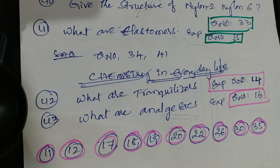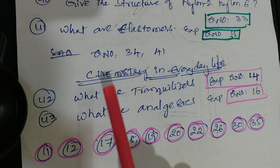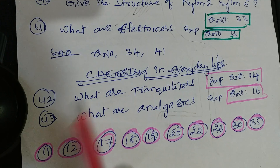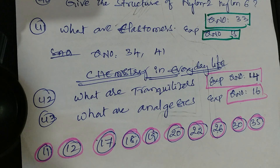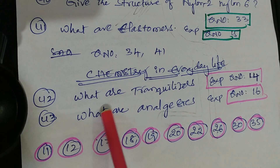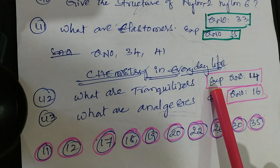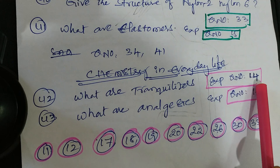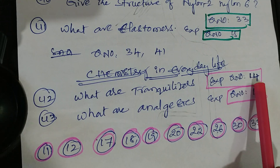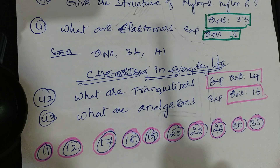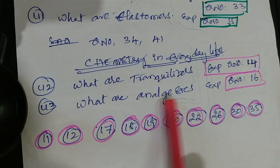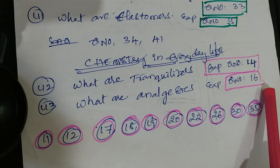The last and very most important lesson is Chemistry in Everyday Life. Two questions will come from this lesson. First one: what are tranquilizers - that is question number 14, give an example. What are analgesics - question number 16.